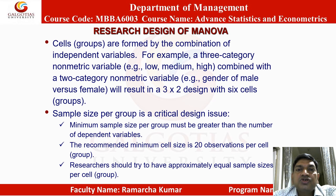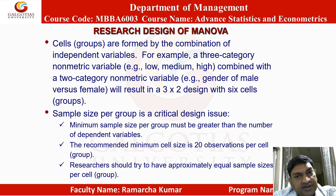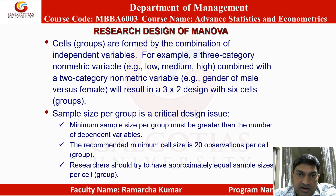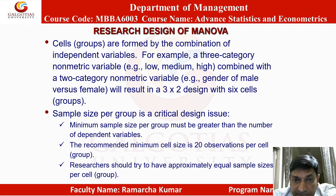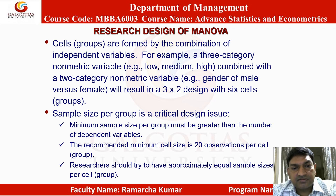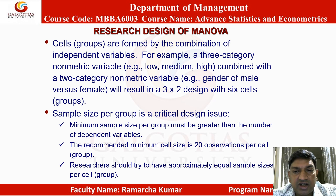Research design of MANOVA: groups are formed by the combination of independent variables. For example, a 3-category non-metric variable (low, medium, high) combined with a 2-category non-metric variable (gender: male vs. female) results in a 3×2 design with 6 groups. Sample size per group is a critical design issue; the minimum per group must exceed the number of dependent variables, the recommended minimum cell size is 20 observations per cell, and approximately equal sample sizes per cell are recommended.